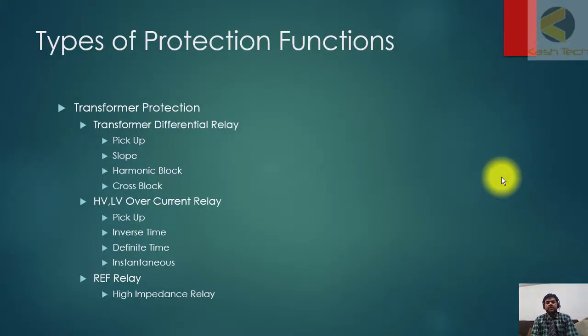We will start our new topic: types of protection functions. We will start with transformer protection. Transformer protection includes transformer differential protection. The function and typical characteristics of this relay include pick-up, slope, harmonic block, and cross block.